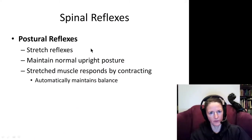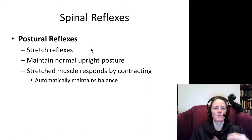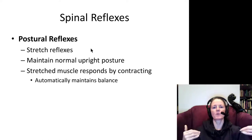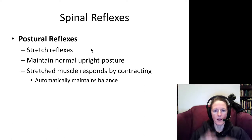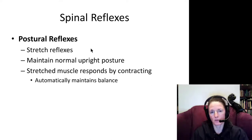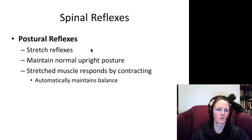Stretch reflexes are important in postural reflexes. If you start to fall forward, your calves will be stretched and will immediately contract to pull you upright. If you sway backwards, muscles like the tibialis anterior and anterior thigh muscles stretch and immediately adjust to restore upright posture. This helps maintain balance automatically, happening several times a second. Postural muscles like the soleus are especially good at this, constantly making adjustments without you thinking about it.